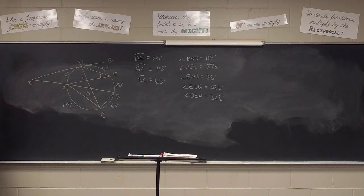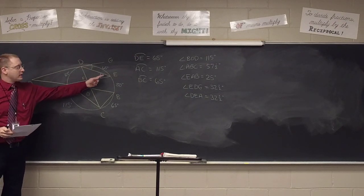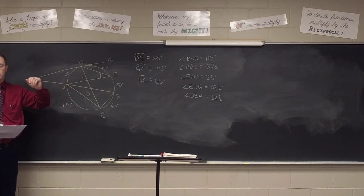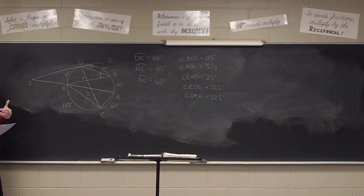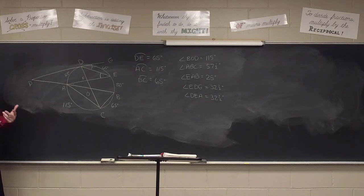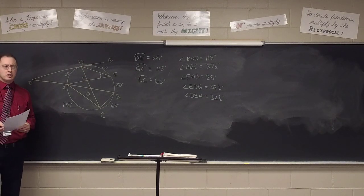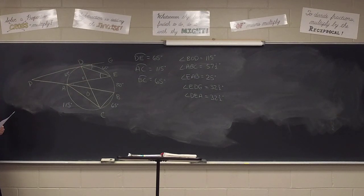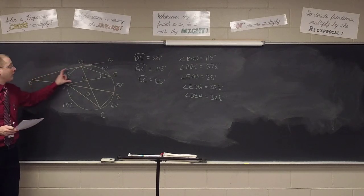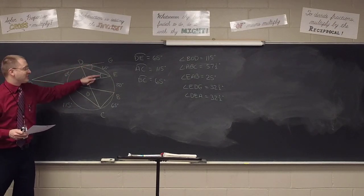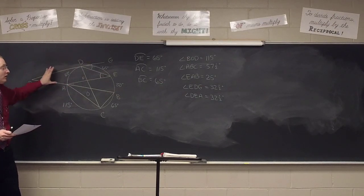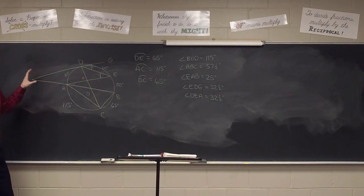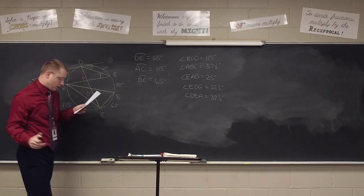What would that mean? Both of these angles are 32 and a half. Well, they're each half their respective arcs. But think outside the circle for just a minute — ignore the existence of the circle. Their lines are parallel, because these are alternate interior angles. So apparently these are parallel lines. This is an interesting observation — it has nothing to do with the circle, but I thought I'd point that out.